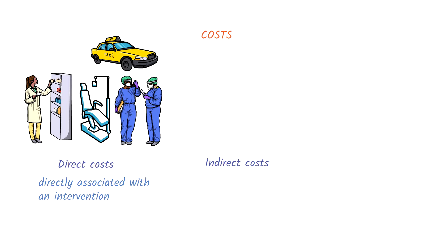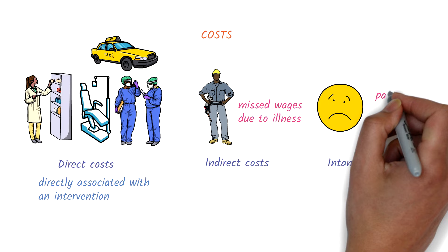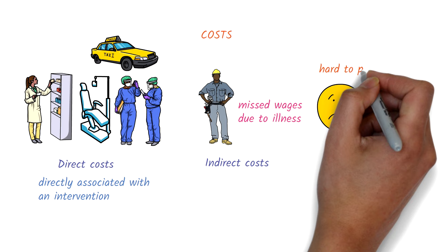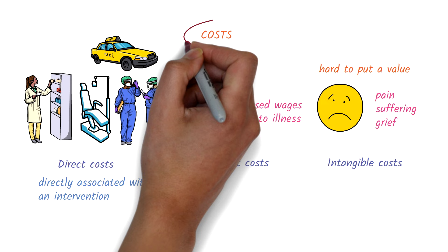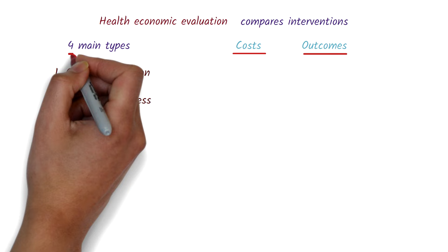Indirect costs are costs associated with reduced productivity due to the illness or its treatment. An example is missed wages because of not working due to the illness. Intangible costs are subjective, such as pain, suffering, or grief due to the illness or treatment. These costs are quite hard to put a monetary value on. That's a look at the different types of costs.